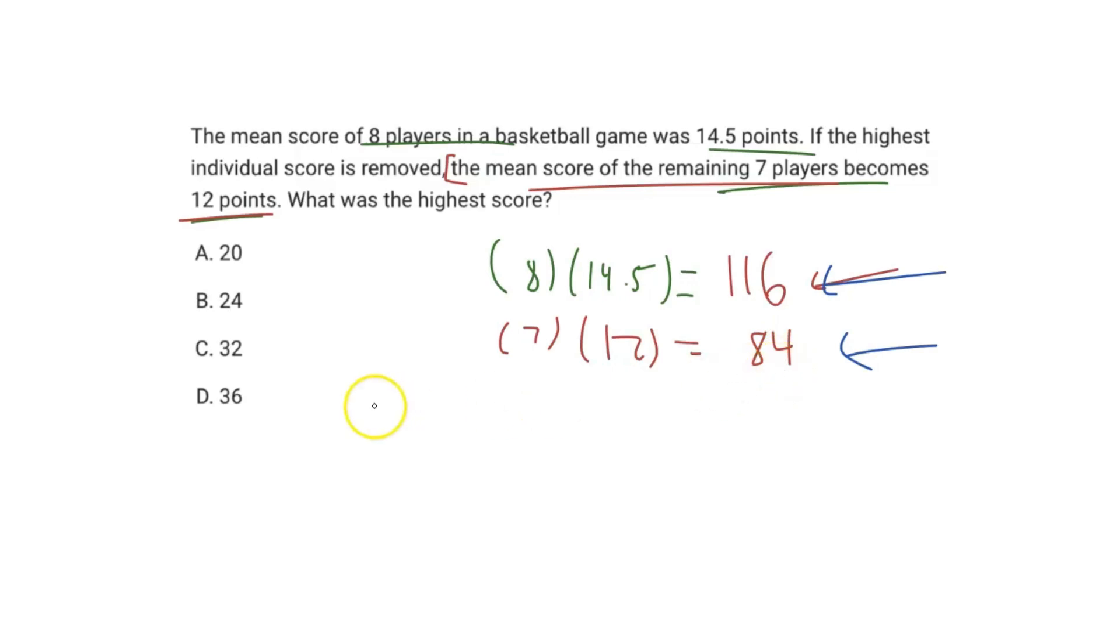So 116 minus 84 will give us a value of 32 points. And therefore, in our case, C is the correct answer.